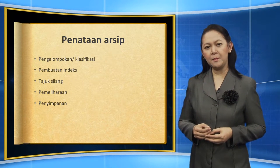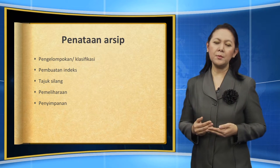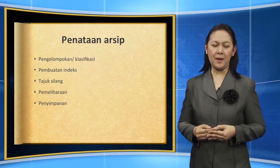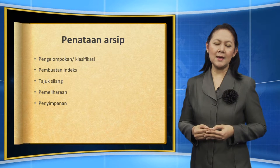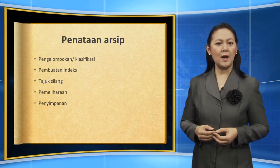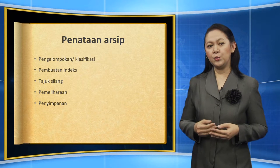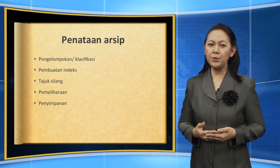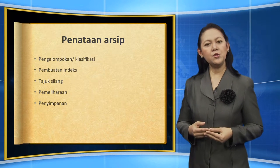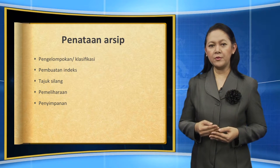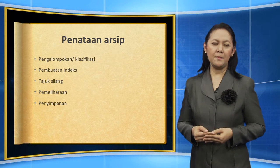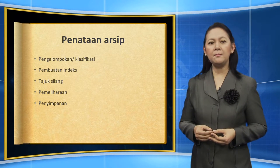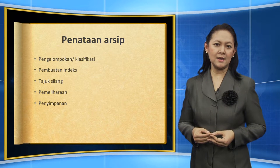Ini yang harus kita perhatikan dalam pembuatan tajuk silang — kata-kata yang harus kita lihat bisa menggunakan kamus bahasa Indonesia ataupun tesaurus bahasa Indonesia, sehingga penunjukan kata tersebut tepat adanya. Kemudian, kegiatan berikutnya adalah pemeliharaan. Setelah tersusun baik, kita lakukan pemeliharaan dengan cara penyimpanan yang tepat. Setiap arsip memiliki kekhasan tersendiri. Untuk arsip tercetak ataupun kertas, disimpan dalam peraturan tersendiri — baik itu suhu, tempat, dan ukuran. Begitu juga untuk arsip yang berbentuk audiovisual, yang bisa berbentuk foto, film, ataupun mikrofis, itu memerlukan tempat dan penyimpanan dengan syarat-syarat tertentu.